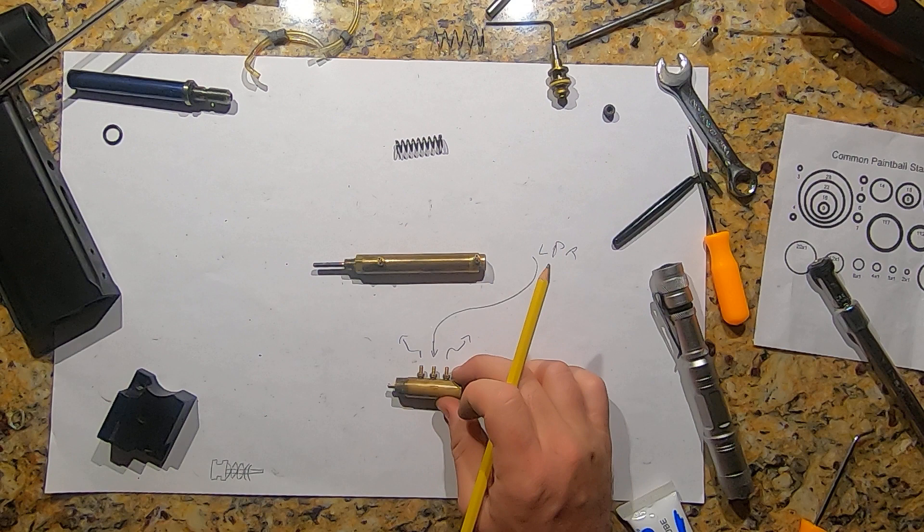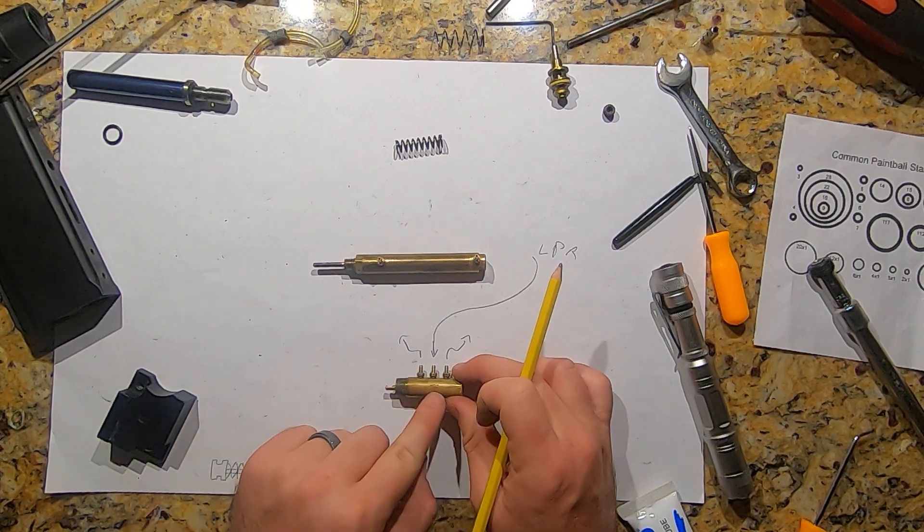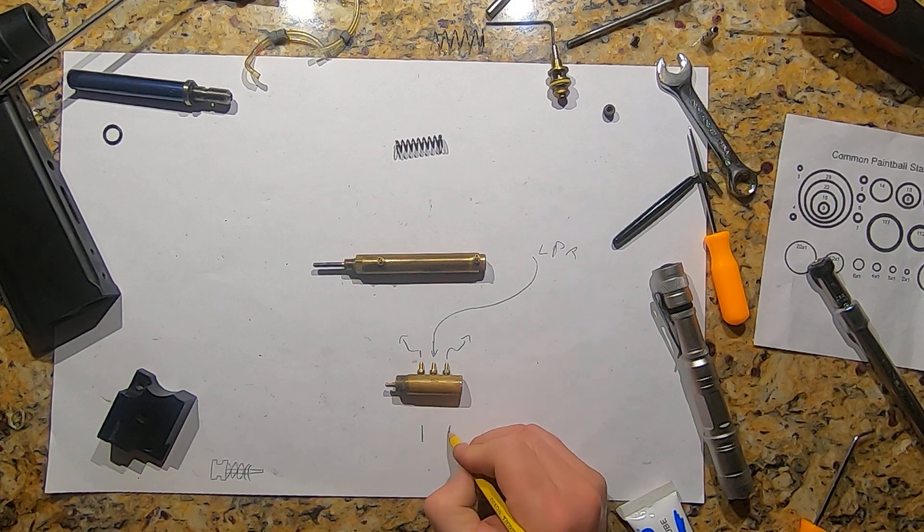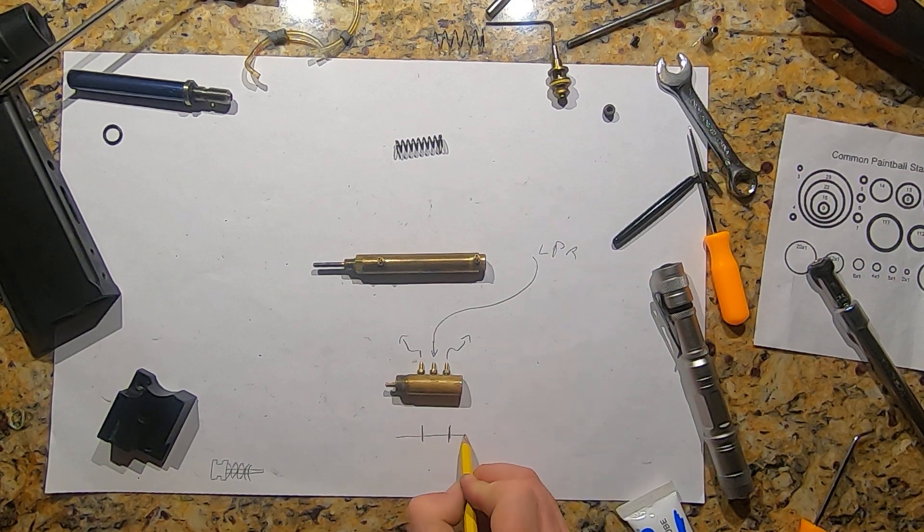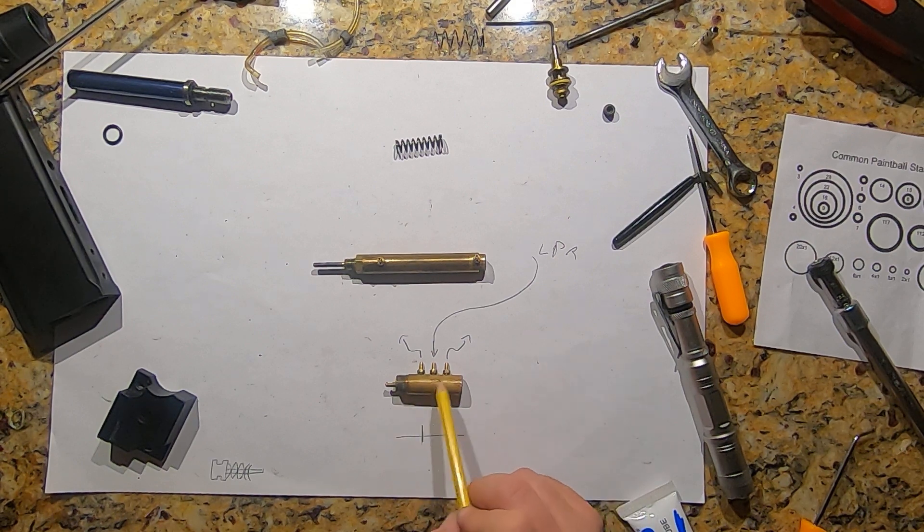The position of this guy moves O-rings that are in here. On this shaft, there are two O-rings. The position of which dictates which way the air flows.